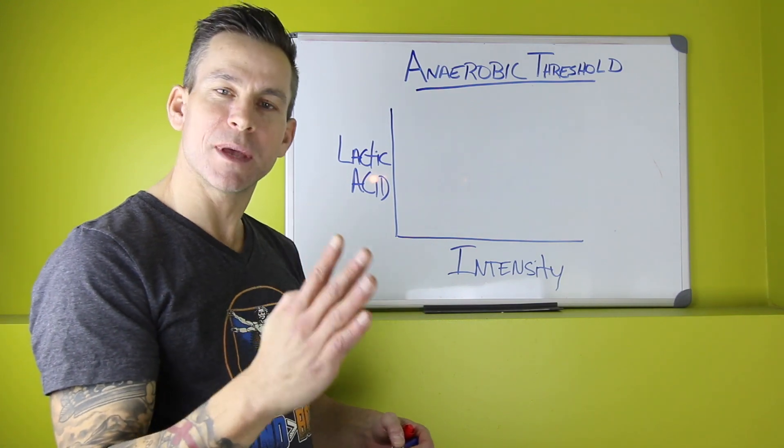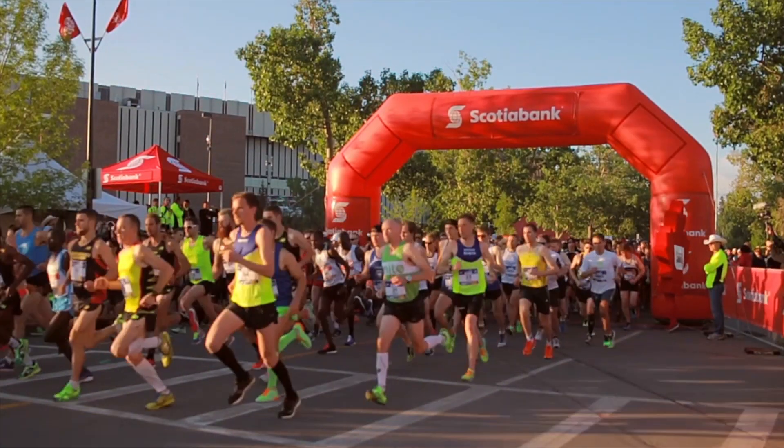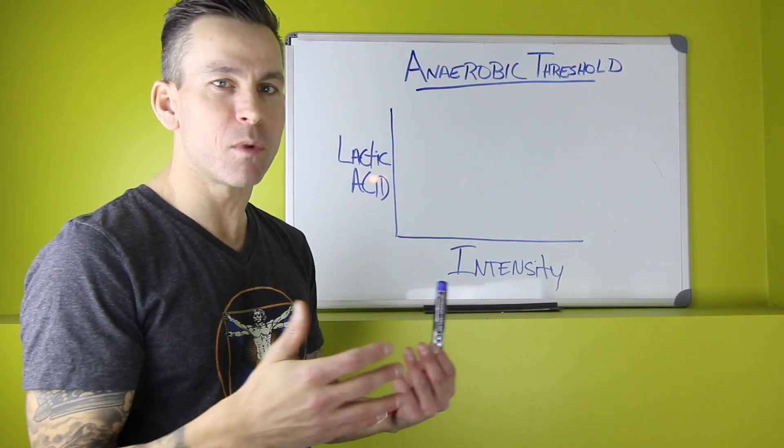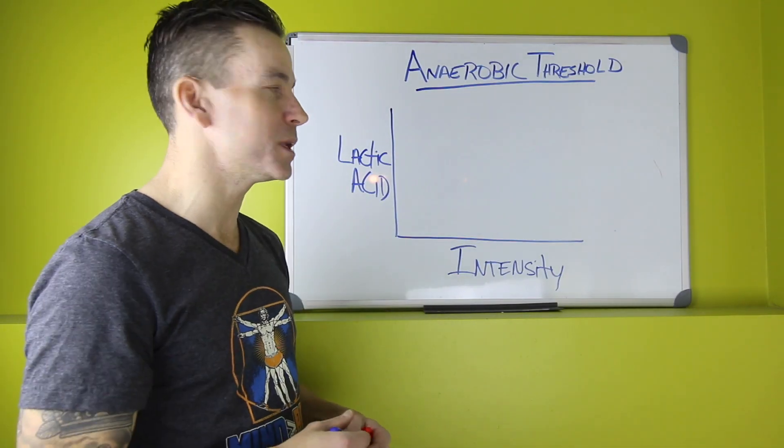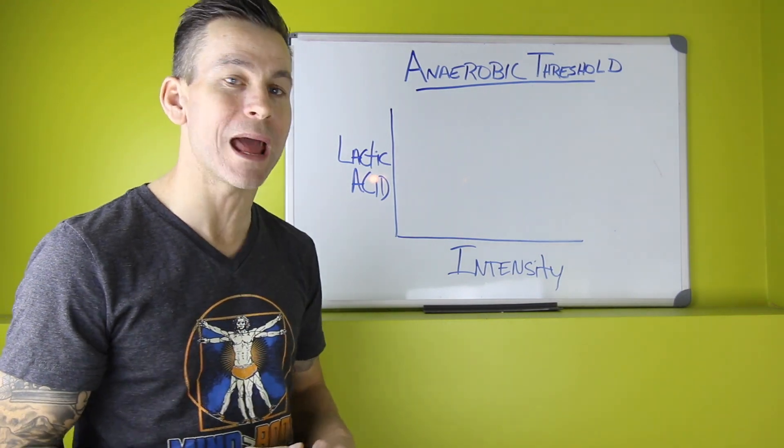For the average person, your threshold ends up hitting somewhere between a 10K and a half marathon effort. Generally, your threshold for most people, as a rule of thumb, would be somewhere in a pace or intensity level that you could hold for an hour.